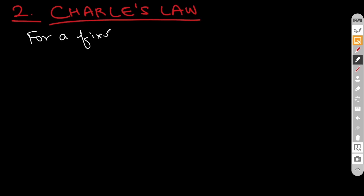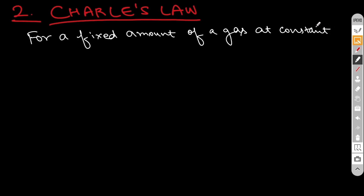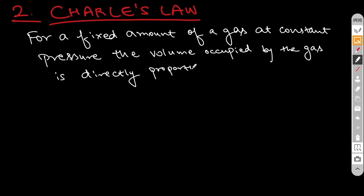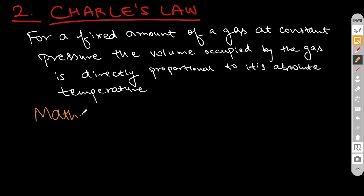For a fixed amount of gas at constant pressure, Charles law states that the volume occupied by the gas in a container is directly proportional to its absolute temperature. This is the simple definition for Charles law.